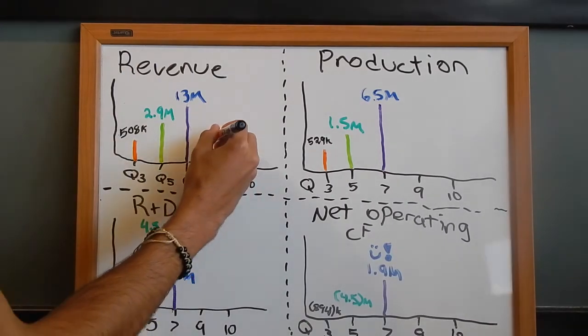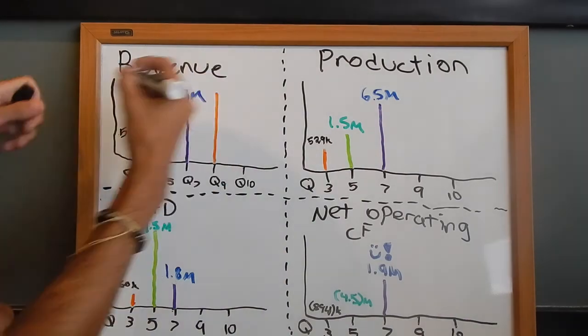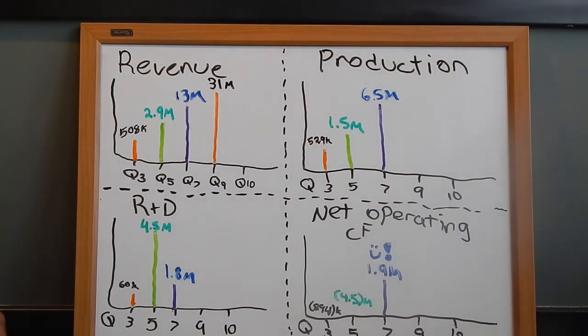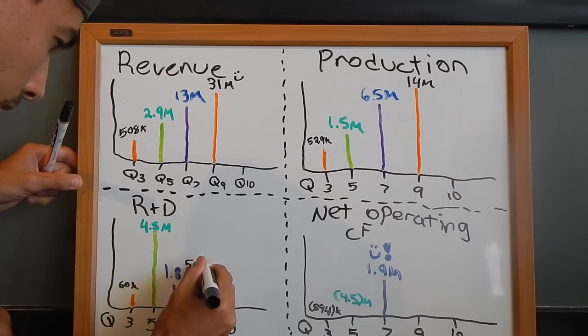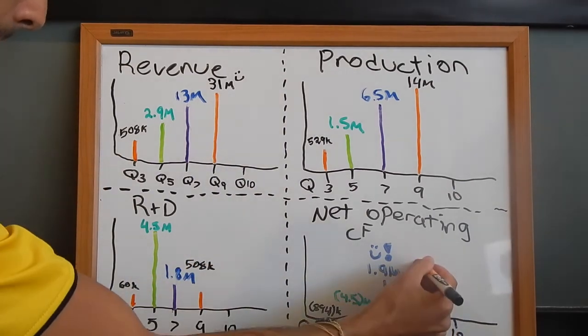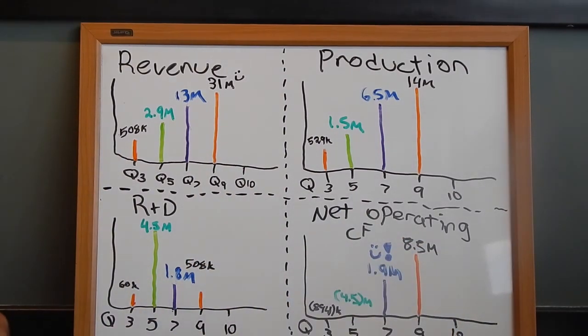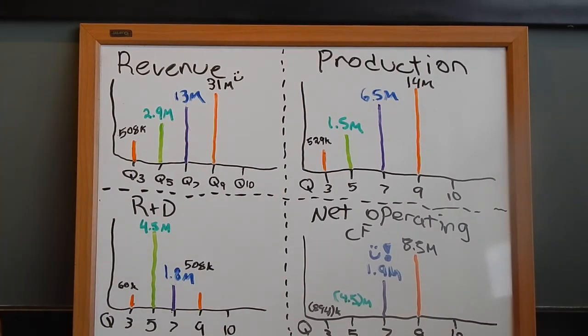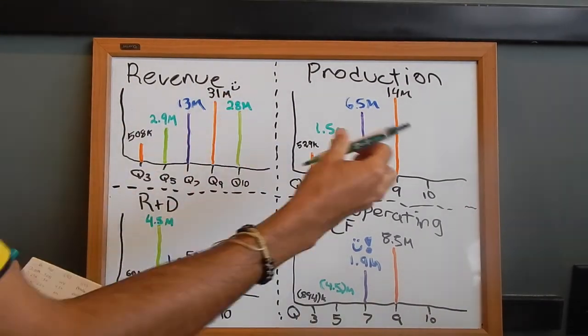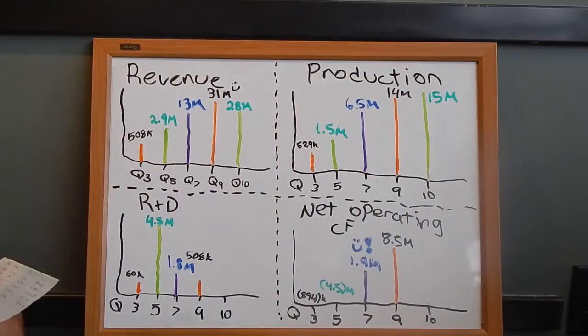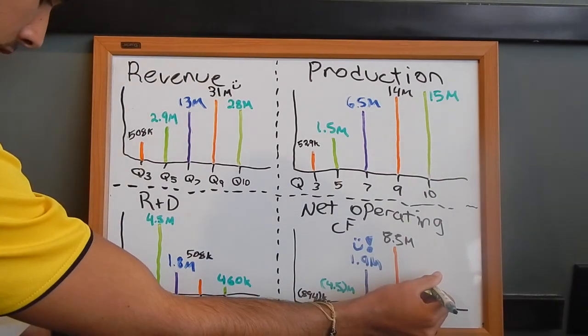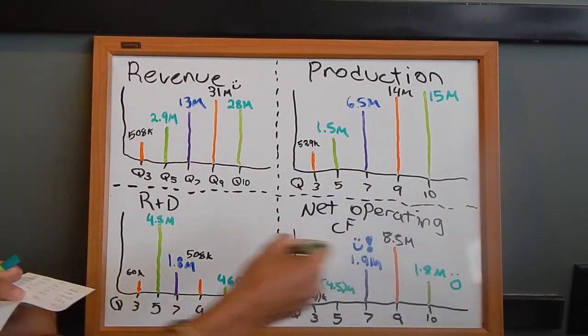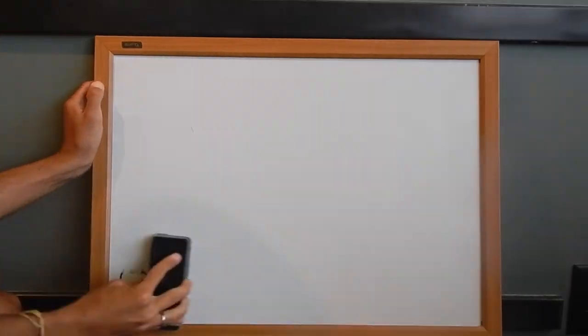Quarter nine seemed to be our best quarter thus far, with $31 million in revenues, $14 million in production costs, $580k in research and development, and $8.5 million in net operating cash flows. As for quarter ten, it was a bit surprising that we went down with the numbers. At $28 million for revenue, $15 million for production costs, $460k for research and development, and $1.8 million in net operating cash flows.